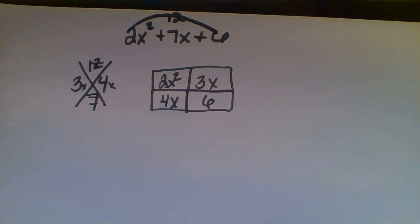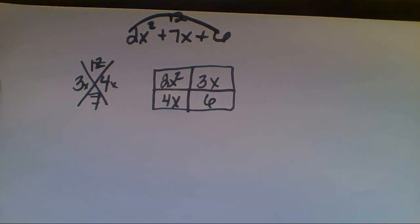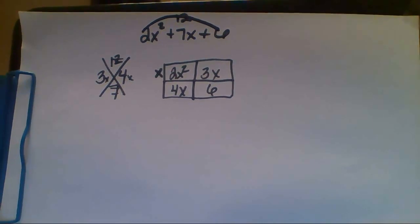So we're going to look at the top row and look for the greatest common factor of the top row. So the GCF of the top row is x, so we pull out the x.